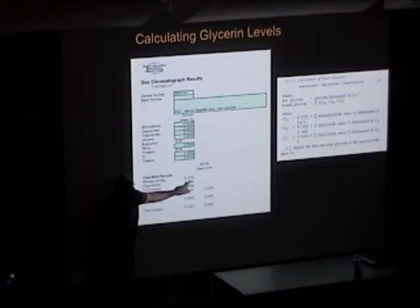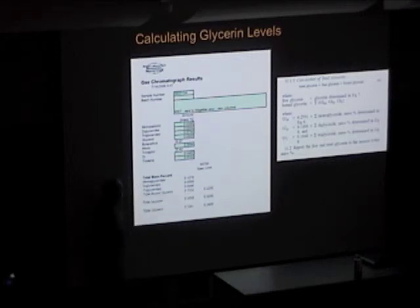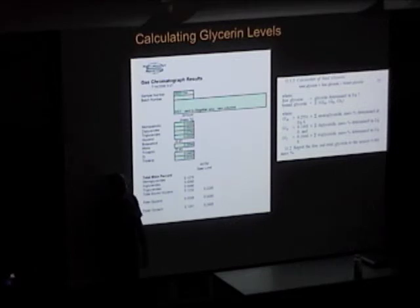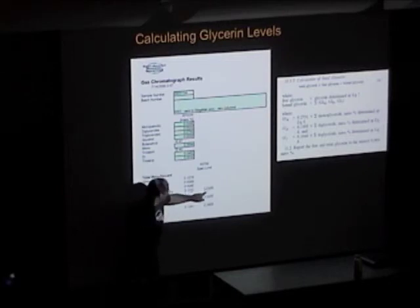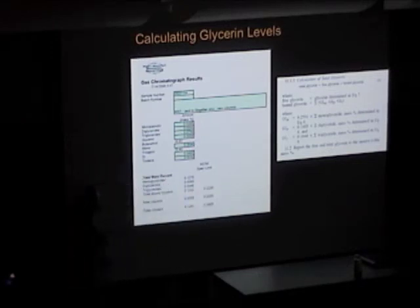My free was 0.08 — the spec is 0.02 — so I'm a little bit unwashed. We get a total glycerin. The ASTM spec — and somebody correctly pointed out last year — there is no ASTM spec for bound glycerin separately. There's a spec for free at 0.02 and total at 0.24.